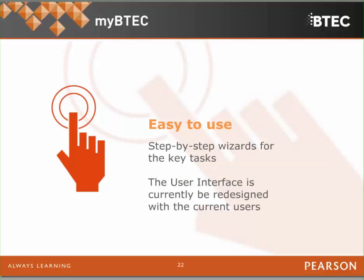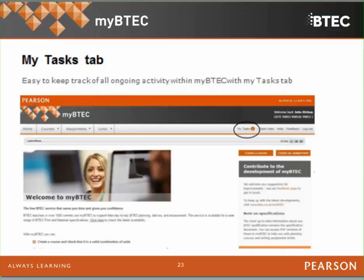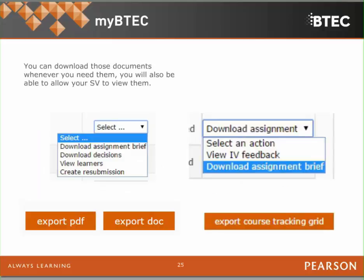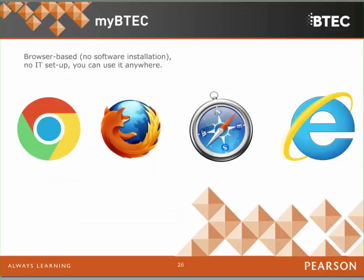It's easy to use with step-by-step wizards for key tasks that help you with generating your paperwork. It helps you keep tabs on what you're doing — when you log in, there's a My Tasks button at the top. If you have to IV a colleague's work or have assessment work that needs filling in, you click on that and it takes you straight to what you need to do. All documents are in Pearson-approved format and can be exported in a variety of file types including PDFs or Word docs. MyBTech is also browser-based — there's no software to install, no IT setup. As long as you access it through mybtech.pearson.com, you can access it from anywhere.